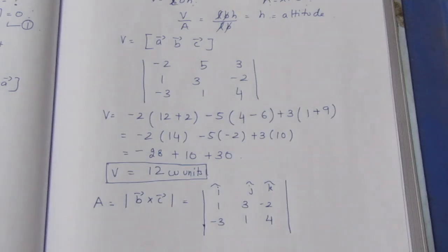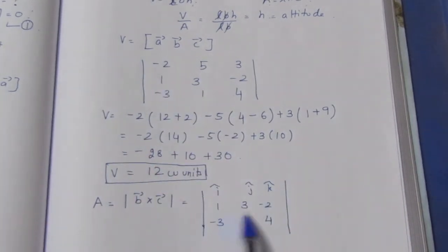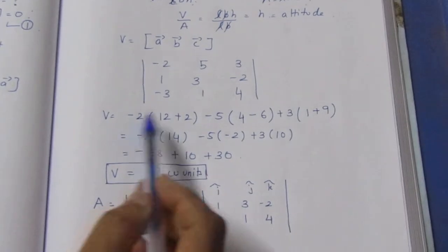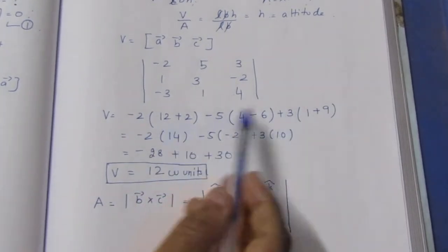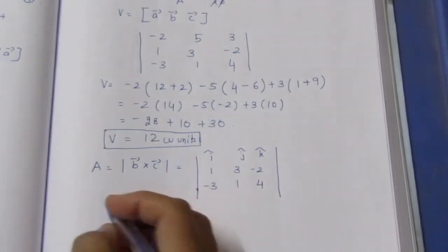This is straightforward. We expand along the first row to find B cross C.